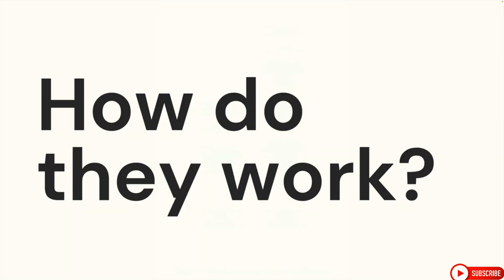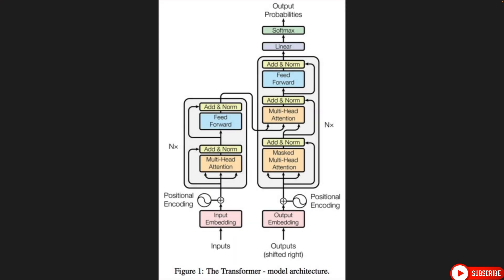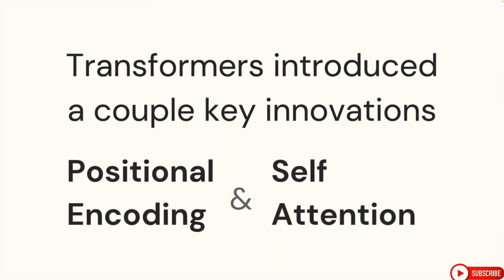So how do they work? We're not going to get into much detail, but there's a diagram from the paper 'Attention is All You Need' — this is the model architecture of the transformer, and it's absolutely overwhelming to look at. You'll notice several mentions of the word attention: multi-head attention, masks, multi-head attention. Attention plays a very important role in this model architecture. There are really two key innovations that were introduced: positional encoding and self-attention.